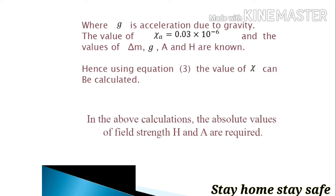Where g is the acceleration due to gravity. The value of χ_A, that is volume susceptibility of air, is χ_A equals 0.029 times 10 to the power minus 6, and the values of Δm, g, A and H are known.